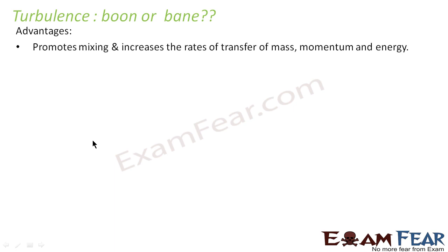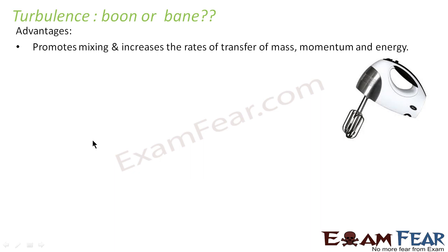Let us look at certain advantages of turbulence. It promotes mixing and increases the rate of transfer of mass, momentum, and energy. In turbulence there is intermixing of different particles, whereas in laminar flow there is no intermixing — the streamlines don't even intersect. You can think of the mixer grinder or juice mixer at home to get an idea of what turbulence looks like.